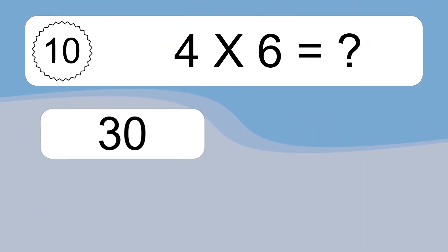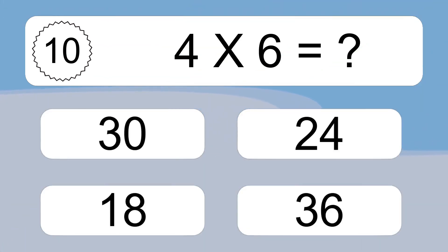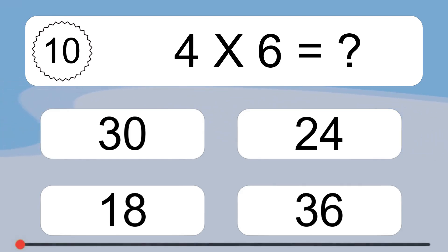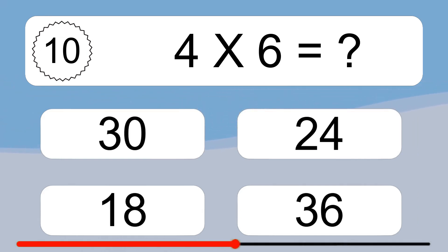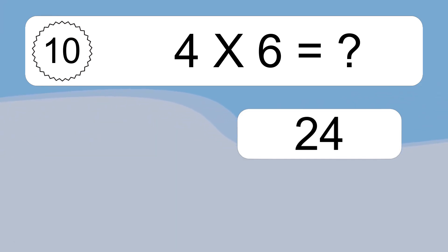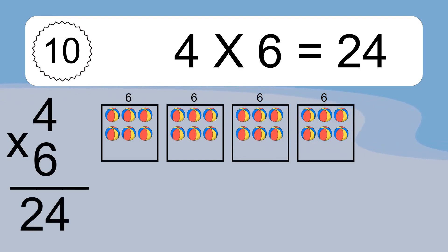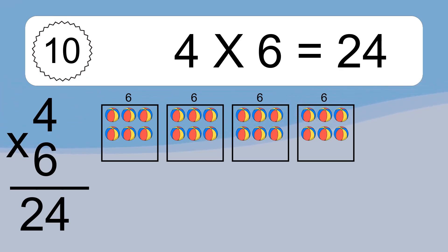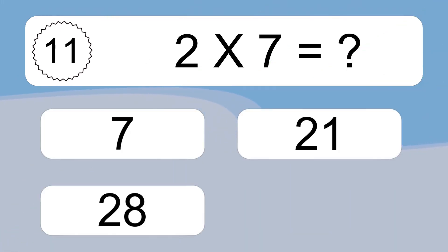Four times six equals twenty-four. We have four boxes, and each box has six colorful balls inside. If you count all the balls in all the boxes together, you will have four times six balls. This equals twenty-four balls.